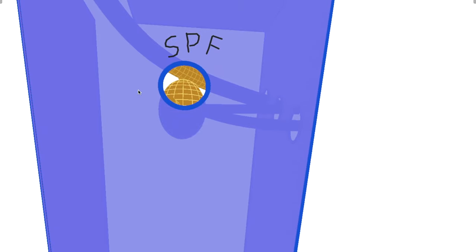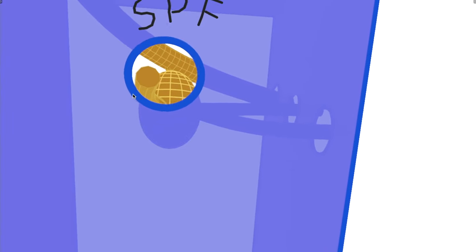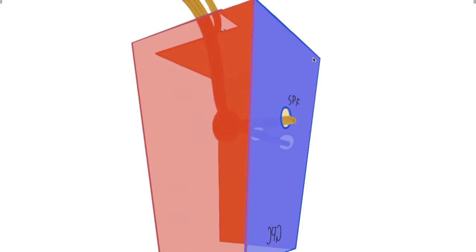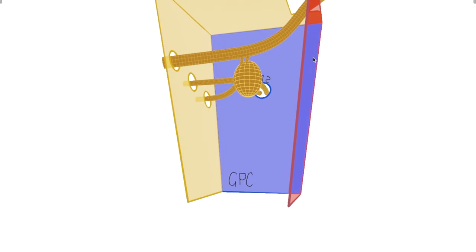Through the sphenopalatine foramen goes both the sphenopalatine nerve and the nasopalatine nerve. Lastly, through the greater palatine canal, we have the greater and lesser palatine nerves.